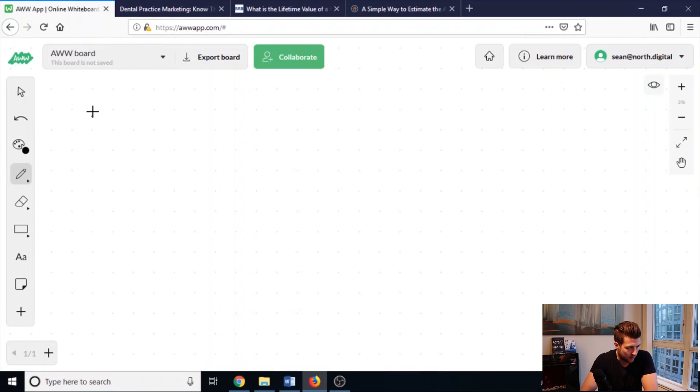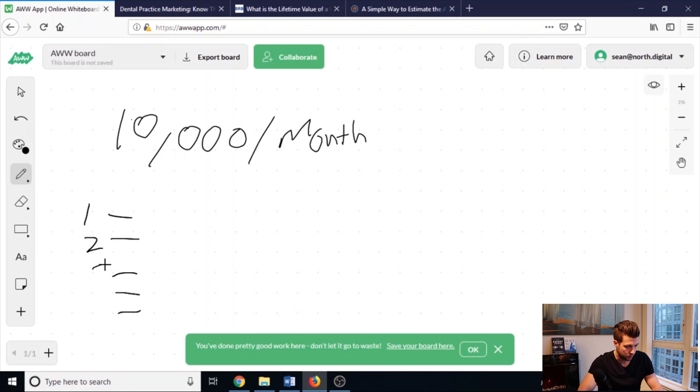Alright, so here we are in the whiteboard. And what we're going to do here is really break down a $10,000 per month agency. And like I've told you, the easiest way to look at this is five clients. So one, two, three, four, five.